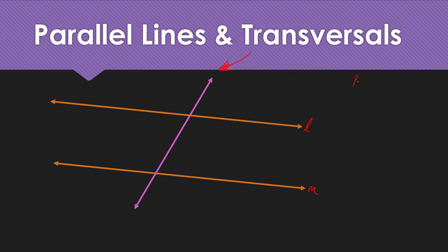A couple of ways they show lines are parallel: one, they're going to tell you — for example, they can say line l is parallel to line m. Another way, which you will see a lot, is they use the symbol for parallel. Just like we had a symbol for perpendicular, the symbol for parallel is kind of like a sideways or slanted 11. So the quickest way to show these two lines are parallel is: line l, parallel symbol, then m — that reads line l is parallel to line m.